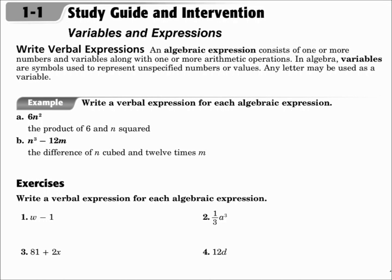This is lesson 1.1, Variables and Expressions. Your objectives are to write verbal expressions for algebraic expressions and to write algebraic expressions for verbal expressions. An algebraic expression consists of one or more numbers and variables along with one or more arithmetic operations. In algebra, variables are symbols used to represent unspecified numbers or values. Any letter may be used as a variable.